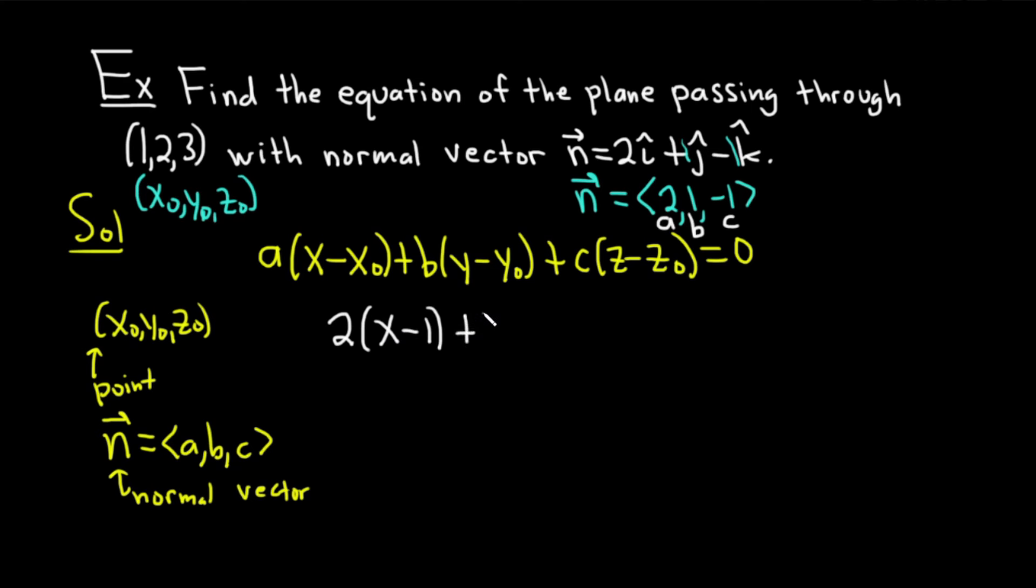And then plus 1 parentheses (y - y₀), which is 2. And then c is -1, so minus 1 times (z - z₀), which is 3. Let's clean this up.